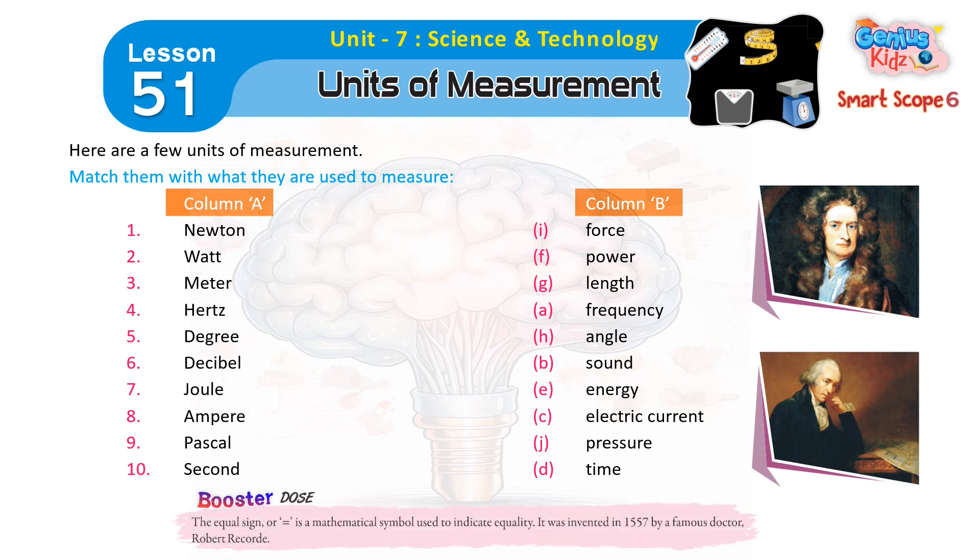Booster Dose: The equal sign, or 'is equal to,' is a mathematical symbol used to indicate equality. It was invented in 1557 by a famous doctor, Robert Recorde.